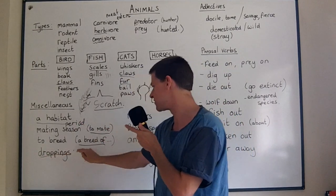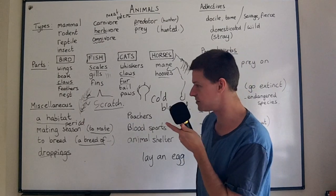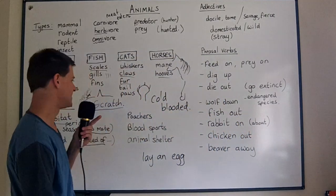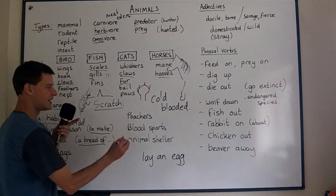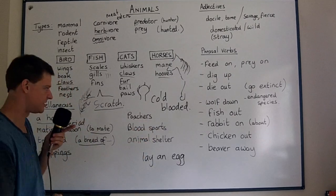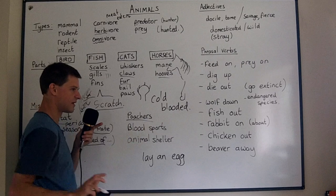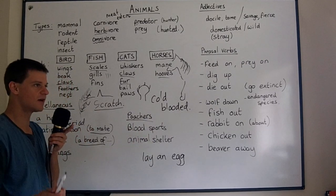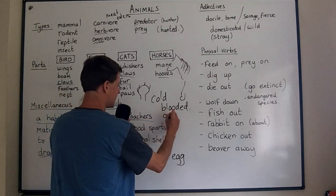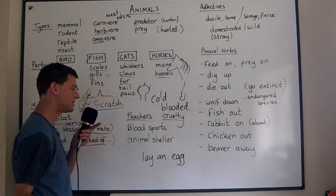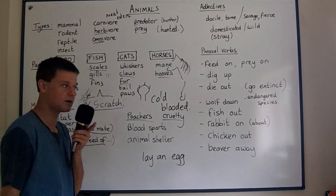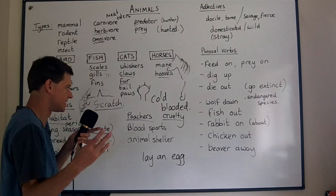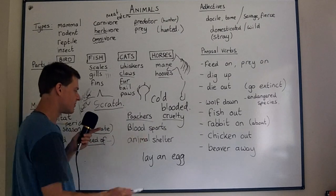Droppings refers to any waste which an animal produces and leaves on the ground — generally not very pleasant. Poachers are illegal hunters who don't have permission to hunt where they are — they're the baddies. Blood sports are any sports involving cruelty to animals, such as fox hunting, where the fox gets ripped apart, or bull fighting, which is very bloody.